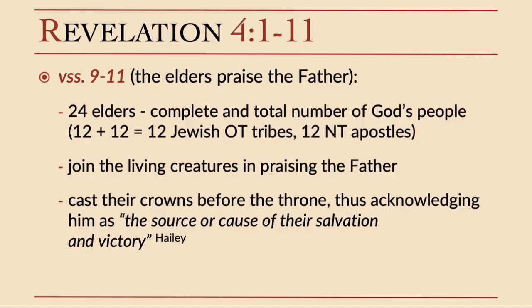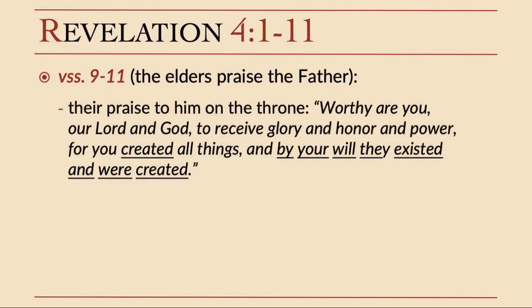The elders cast their crowns before the throne, acknowledging God—as Homer Haley says in his commentary—as the source of their salvation and victory. Their praise to him on the throne says: 'Worthy are you, our Lord and God, to receive glory and honor and power.' Notice there are three things listed—glory, honor, power. Three is the divine number. Numbers are important in Revelation not just when named explicitly, but also when we see things like that in sequence. We're going to notice more of that in chapter 5.